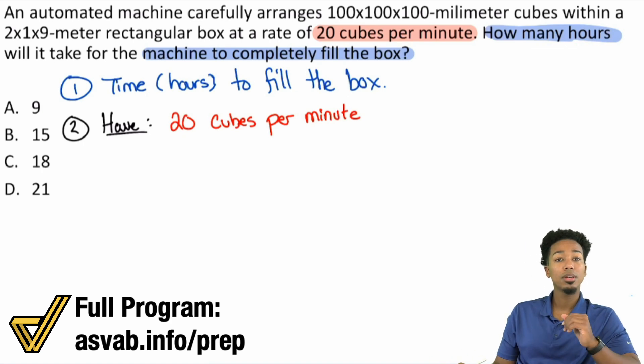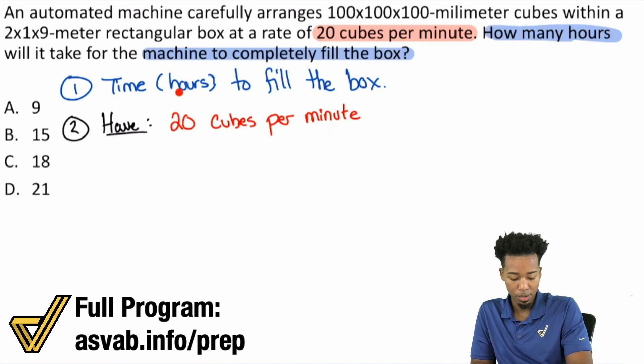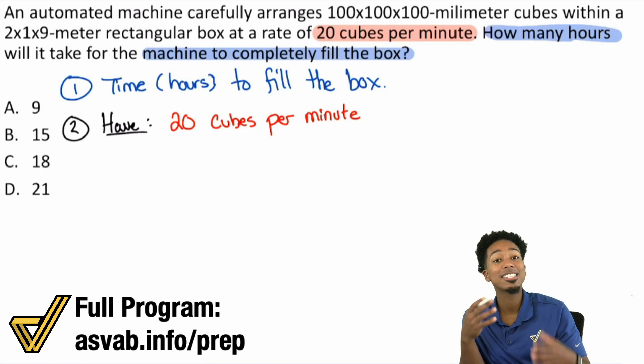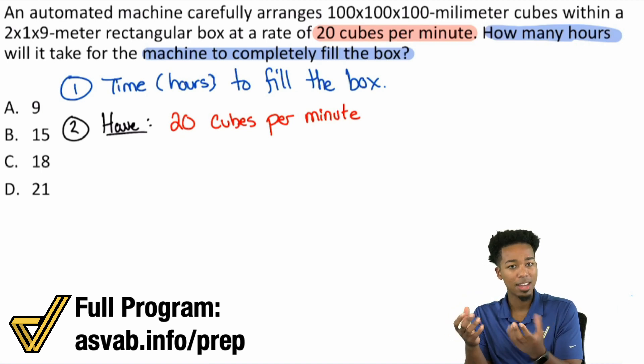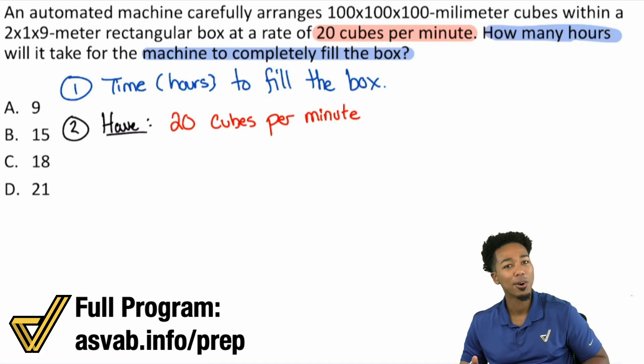So what does that tell me? If this is a distance, rate, time problem, I'm looking for time, I have a rate, what's the distance? The distance is cubes. We're looking for time in minutes, but we need hours. When you look at the distance, the number of cubes, remember the rate is basically your distance over time. Distance cubes over time minutes. So what we're looking for in terms of distance is the number of cubes that will fill the box.